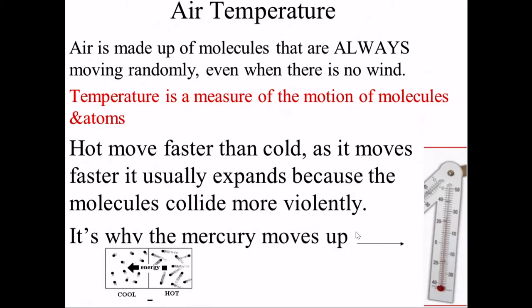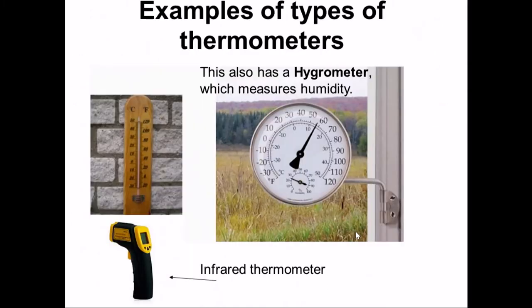But there are other thermometers as well. You might have an infrared thermometer, which measures the amount of infrared light that the thermometer is receiving. You could also have one with a metal strip inside, or thermometers that could have a hygrometer attached to them, which measures humidity.